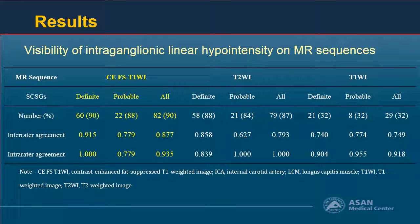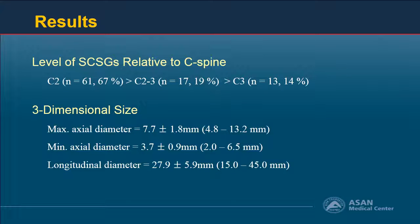Intraganglionic linear hypointensity was demonstrated in 90% of all ganglia and was best demonstrated on contrast-enhanced fat-saturated T1-weighted imaging, followed by T2-weighted imaging, with either good or excellent inter-observer agreement. The most frequent level of the ganglia was C2-C3 in 67% of cases, and three-dimensional sizes are as follows.